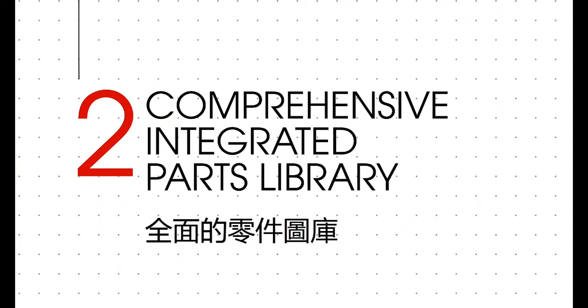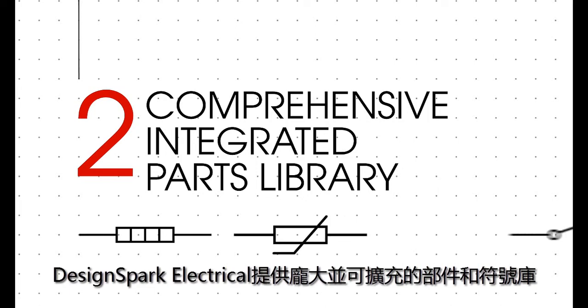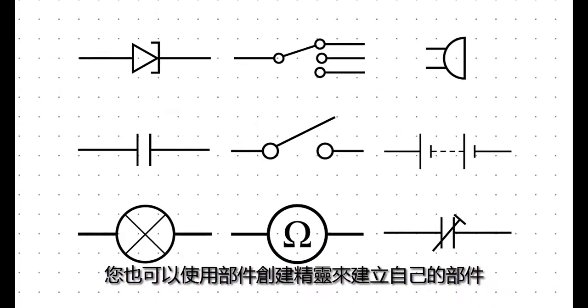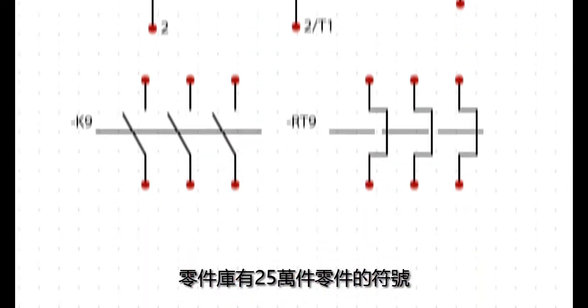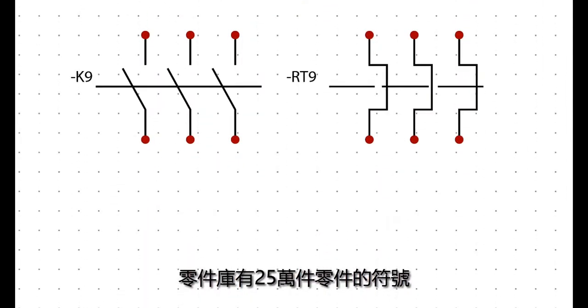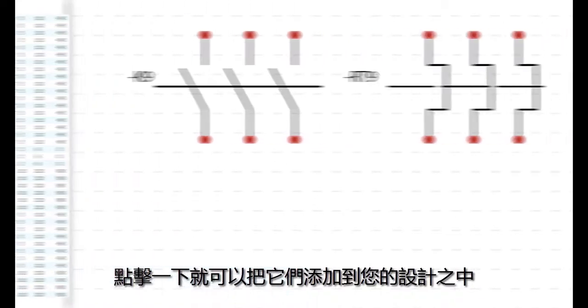2. Our Comprehensive Integrated Parts Library. DesignSpark Electrical provides a huge and expandable selection of parts and symbols, as well as a part creation wizard so you can create your own. There are 250,000 components in our parts library including 80,000 from Schneider Electric, and they're all available to add to your design at the click of a button.